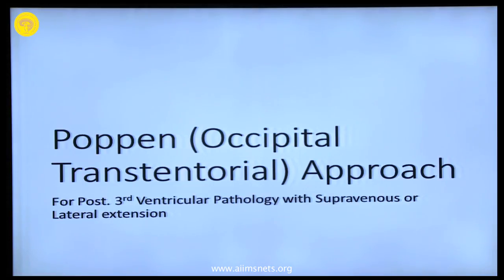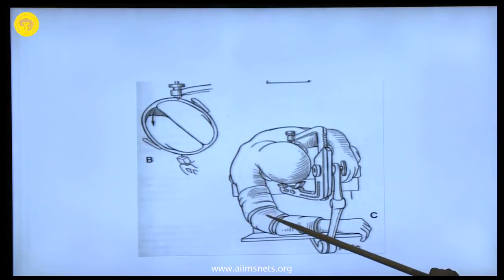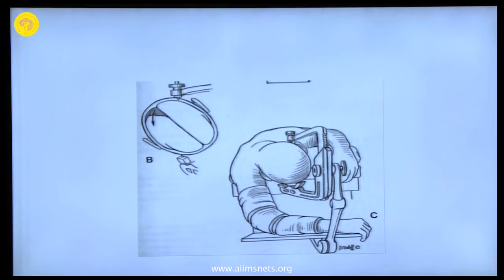I am very fond of this approach because I think it is the best approach for the posterior ventricular region — it gives maximum access. You can cut the tentorium, cut the falx, and have a full approach with access. I prefer this for most posterior ventricular tumours needing open surgery. Two positions are described: park bench or lateral with the operative side down, and prone — the standard description is to make a craniotomy on the down side so the lobe falls away.